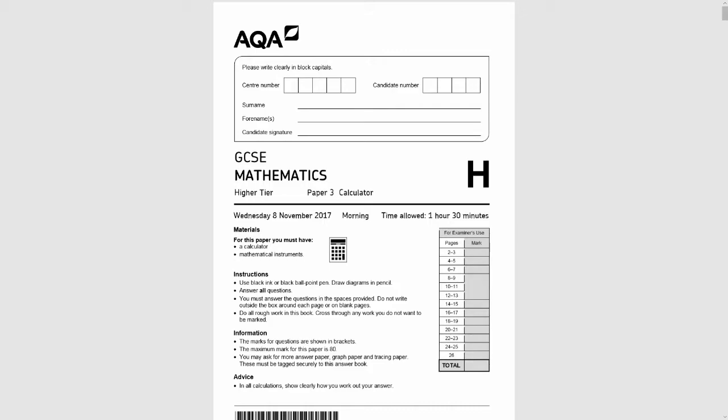Hello and welcome to another GCSE revision video. In this video we're going to be looking at the November 2017 past paper of the AQA GCSE 8300 series. This is the third paper in the higher tier. It is a calculator paper so we are allowed to use calculators.